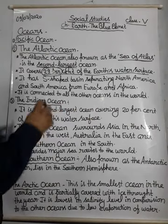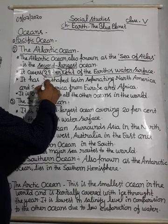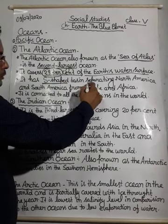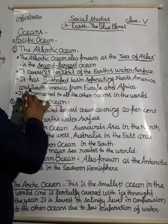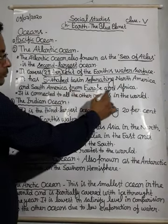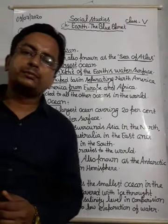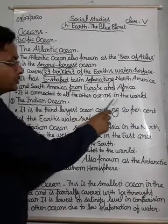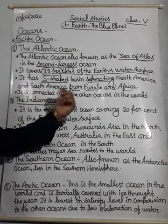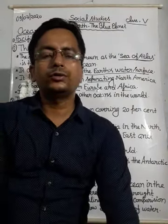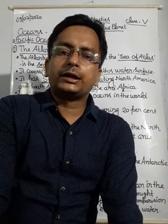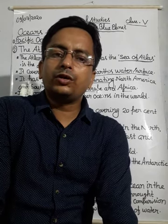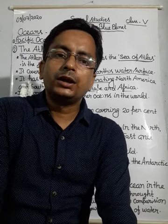The Atlantic Ocean has an S-shaped basin separating North America and South America from Europe and Africa. This ocean is S-shaped and it separates North America and South America from Europe and Africa. It is connected to all the other oceans in the world.